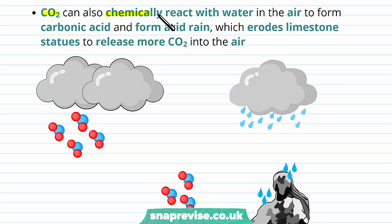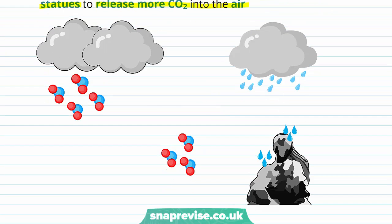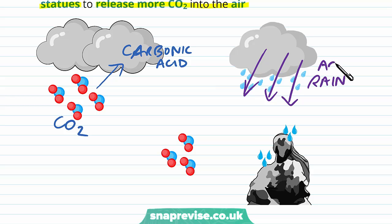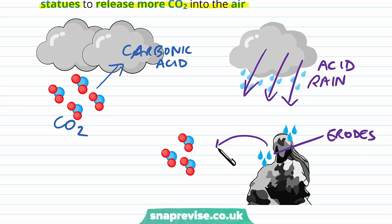Carbon dioxide can also chemically react with water in the air, for example in rain, and this forms carbonic acid. When the acid combines with the rain, we form acid rain, which can erode limestone and other types of stone statues, releasing more CO2 into the air. So carbon dioxide in the air forms carbonic acid with water in the air, the rain brings the carbonic acid down as acid rain, it erodes materials like limestone, and then this releases CO2 back into the atmosphere — forming a kind of cycle.